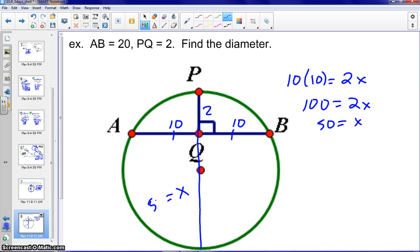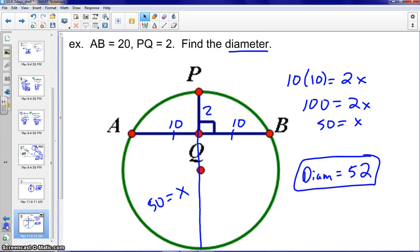And is that actually what we're looking for? No, we're looking for the diameter. So, X is 50, which is only part of the diameter, so we have to add that to PQ. So, the diameter would actually equal 52. And this concludes section 10.8, Notes.